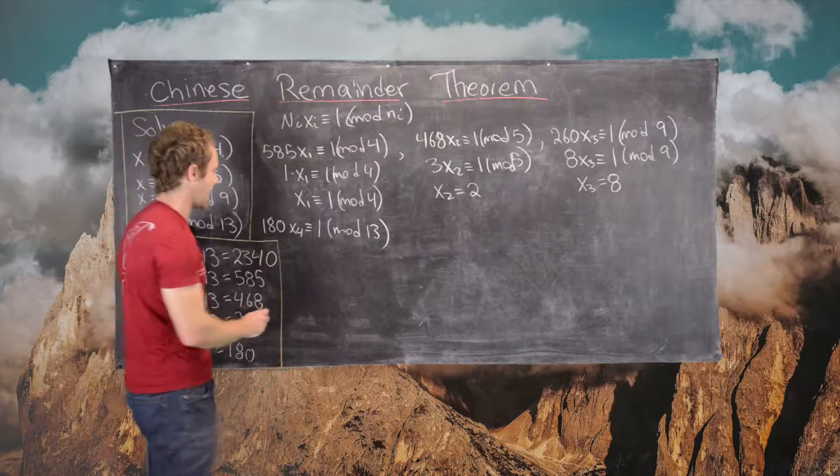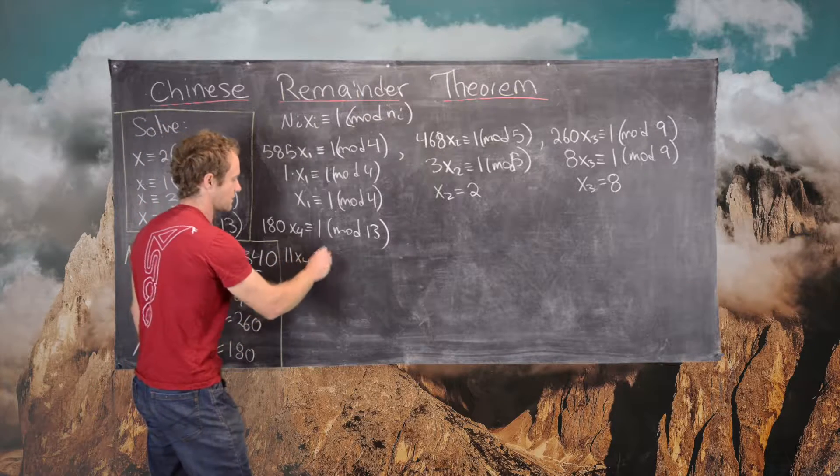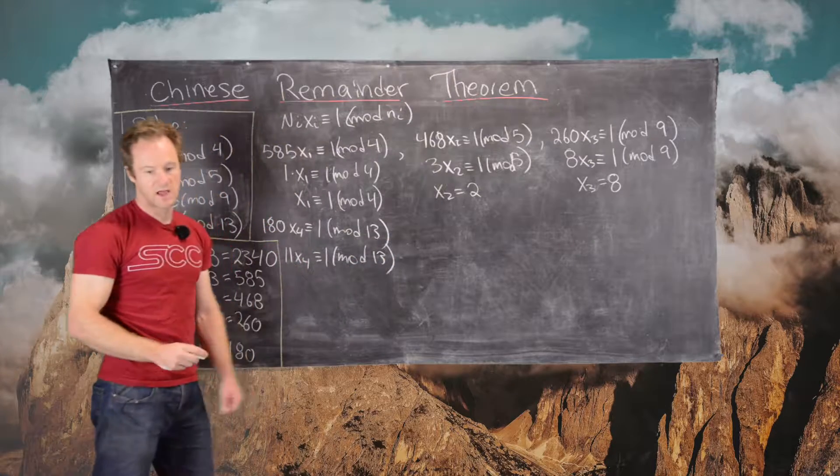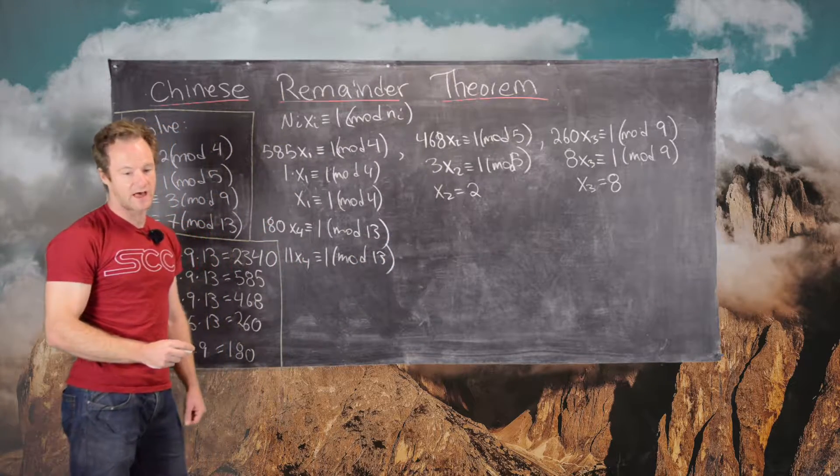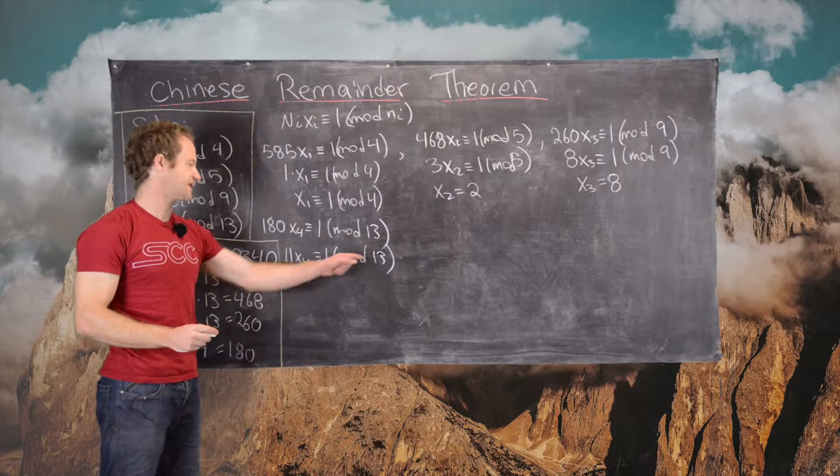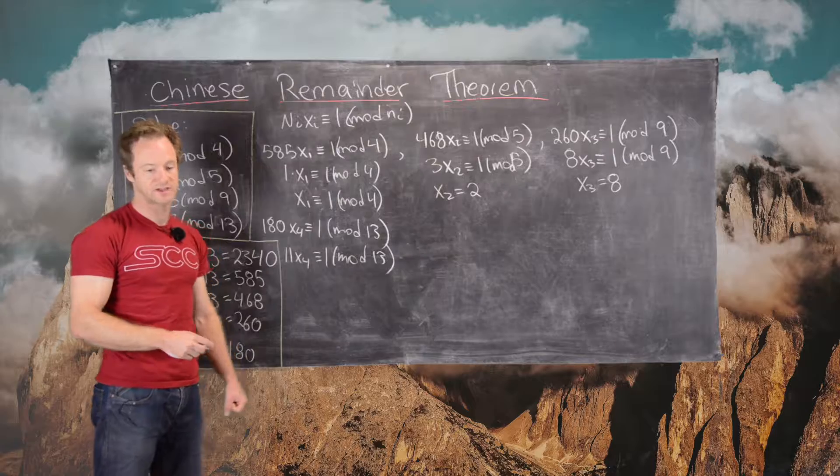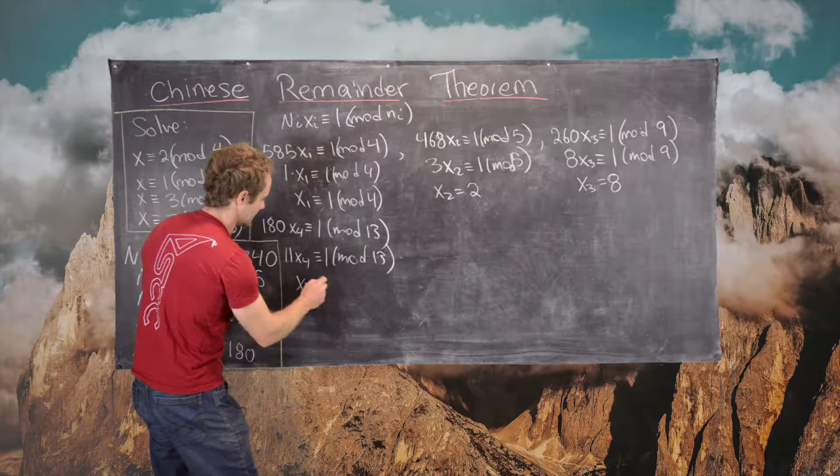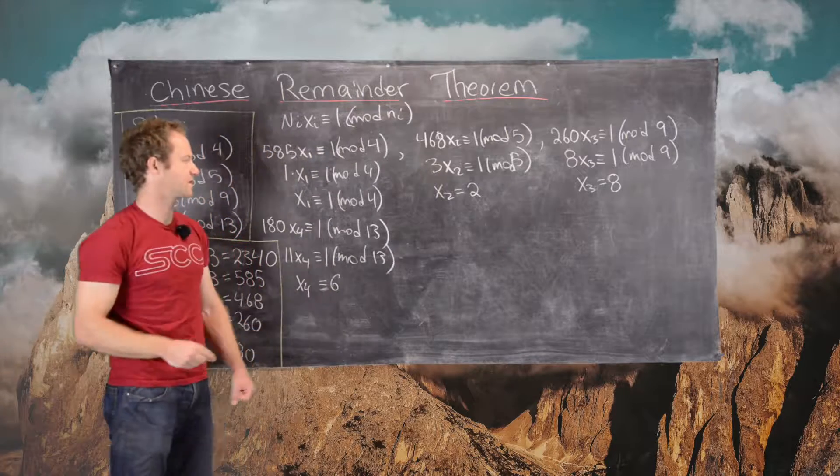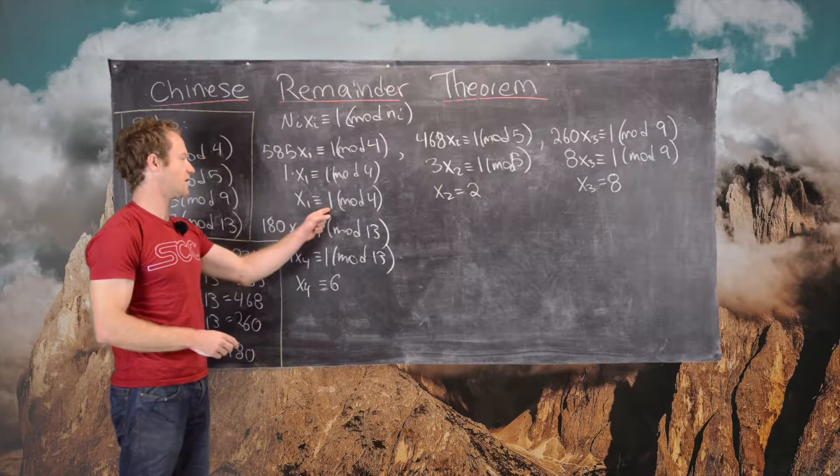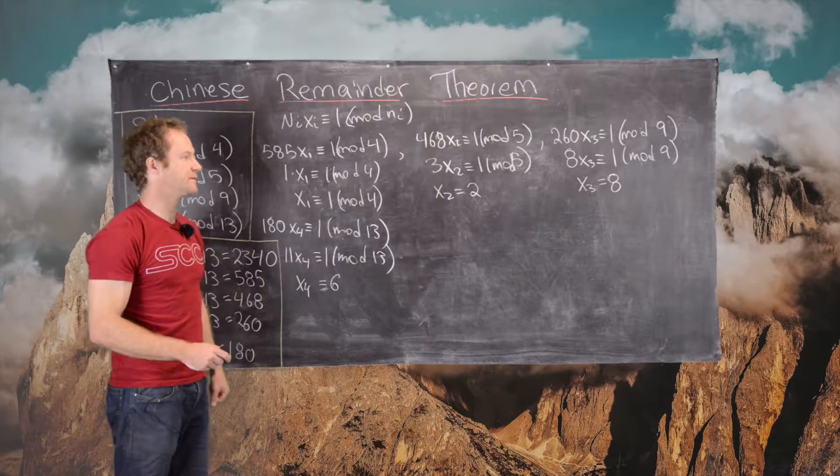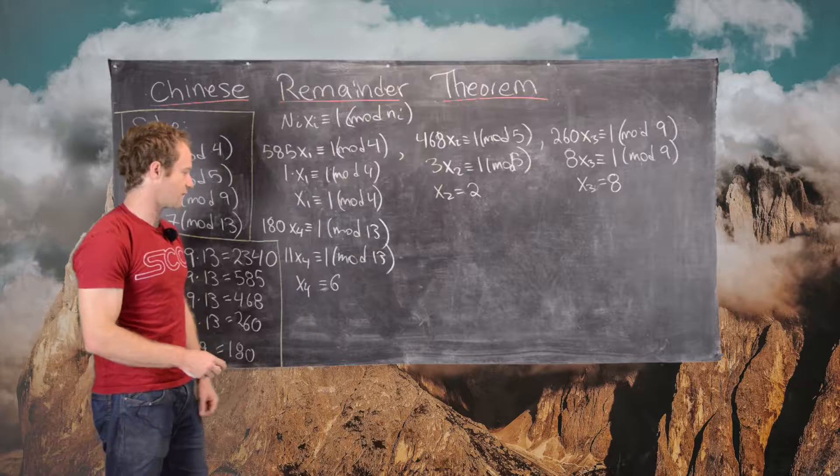And then 180 is the same thing as 11 mod 13. If we notice that 11 times 6 is 66, which is 1 more than 65, which is a multiple of 13, then we have X4 equal to 6. So that means we have X1 equal to 1, X2 is 2, X3 is 8, and X4 is 6.